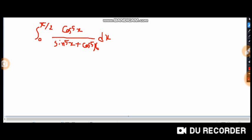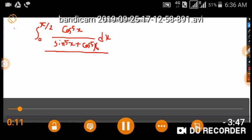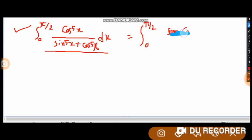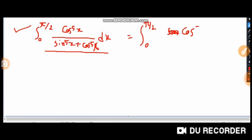This definite integral equals 0 to π/2, cos... sorry, it will be cos to the power 5, π/2 minus x, divided by, in similar fashion, sin to the power 5, π/2 minus x.